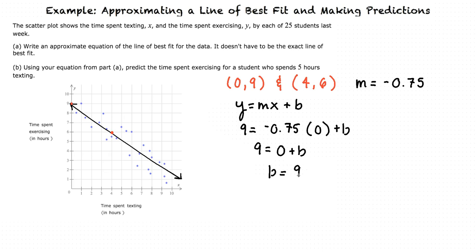Now, we can write our complete equation of the line, which should be y equals negative 0.75x plus 9. Remember, this is only one possible line of best fit, since we are approximating. It is not the one and only line of best fit. That answers part A.